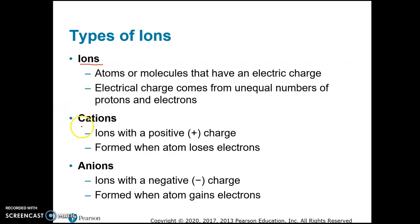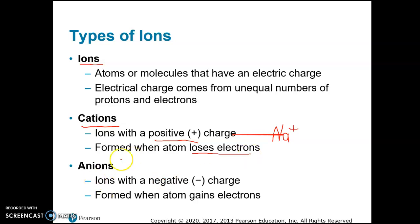If an ion is a cation, it has a positive charge because it has lost electrons — it has more protons than electrons, giving it an excess of positive charge. An example of a cation is sodium; the symbol for sodium is Na+. An anion is negatively charged because it has extra electrons — it has gained electrons. An example of an anion would be chloride, which is the element chlorine with an extra electron, written as Cl with a negative charge.